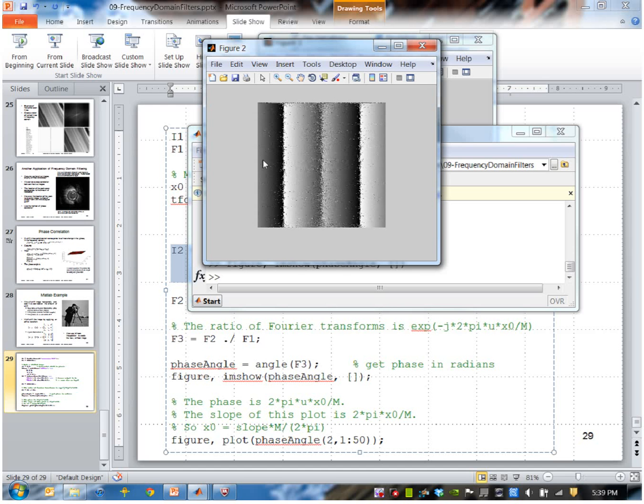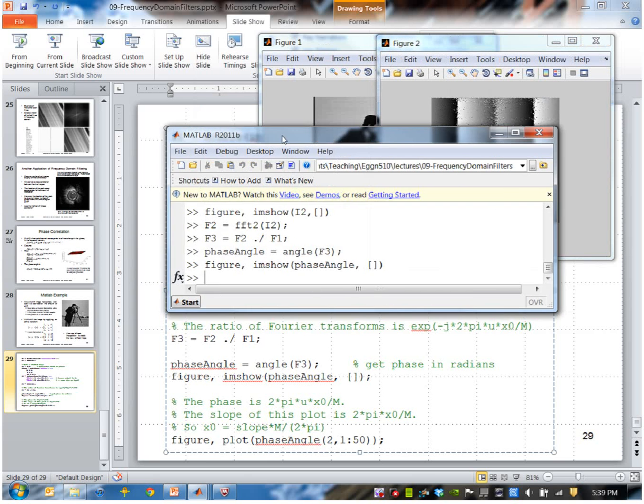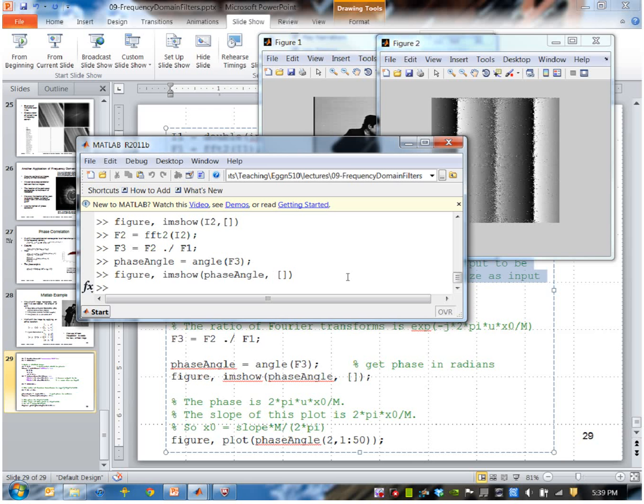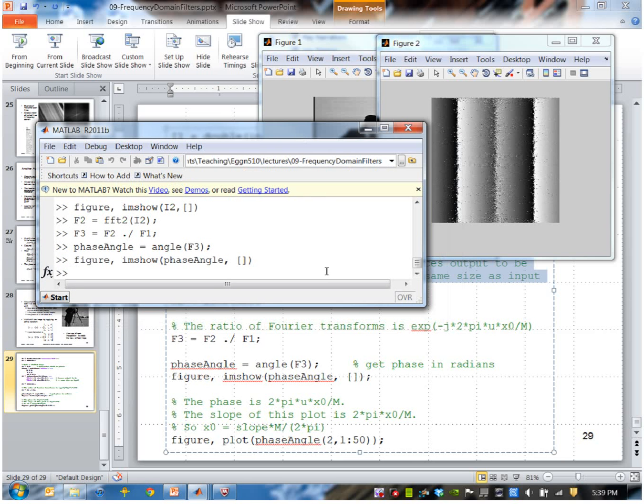What we want to do now is find the slope of this horizontally because I just had a shift horizontally in this case. I won't fit a plane to it, I'll just sort of observe it. I'll use a plot here.